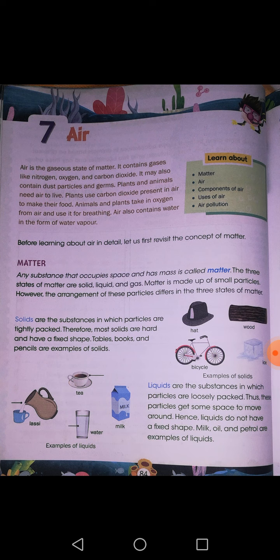So let us study some important points regarding air. But before that you should know what air is. Air is a gaseous state. Everything which is present around you is basically in three states: solid, liquid, or gas. Everything around you — whether it is a table, chair, pencil, rubber, textbook, or notebook — is in one of these three states.